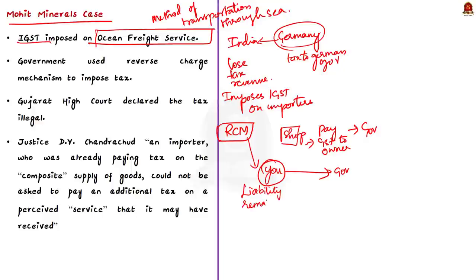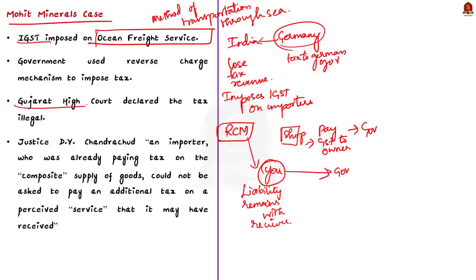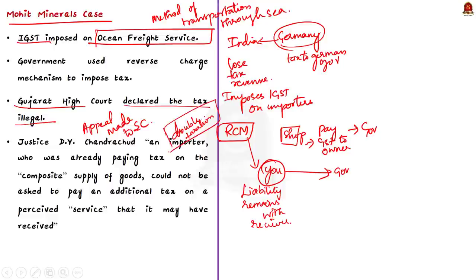In the reverse charge mechanism, normally when you buy products from a shop, you pay GST to the shop owner who then pays it to the government. Under reverse charge, it is you who pays the GST directly to the government instead of the shop owner — the liability of tax payment is transferred to the recipient of the service instead of the supplier. Through this mechanism Indian importers were asked to pay IGST. They brought this issue to the Gujarat High Court, which declared the tax illegal. An appeal was made in the Supreme Court, which upheld the Gujarat High Court judgment.